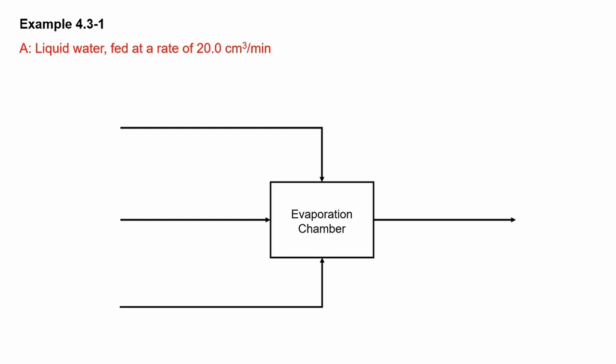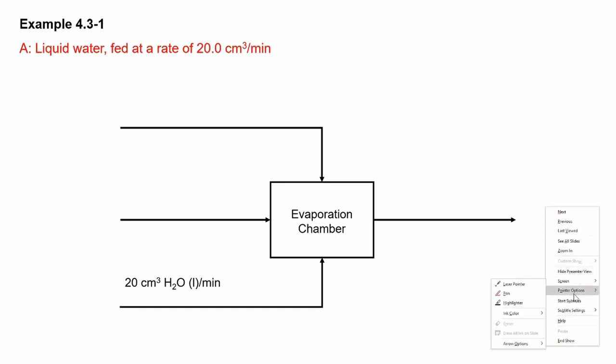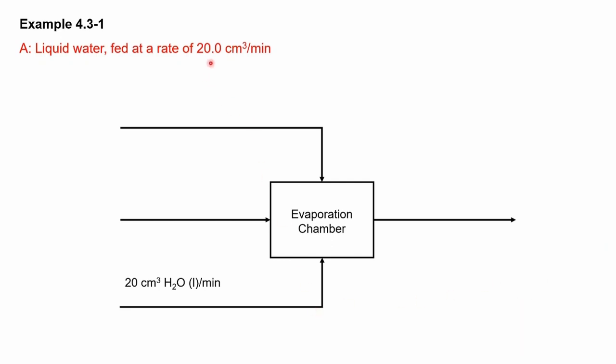Now let's look at our streams. Stream A is described as liquid water fed at a rate of 20 cm³ per minute. You choose which of the three input lines is stream A — I chose the bottom-most stream. I label it: 20 cm³ liquid water per minute, and you write the phase of the component, which is liquid. It is pure liquid with nothing else in it.